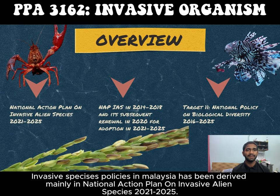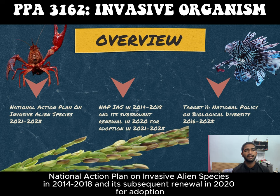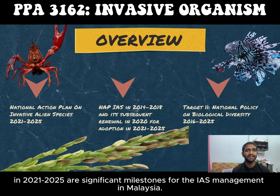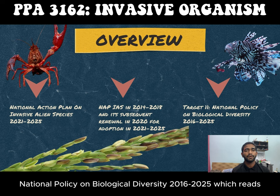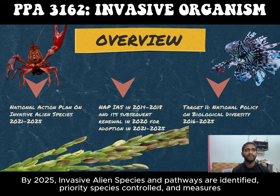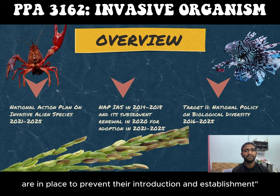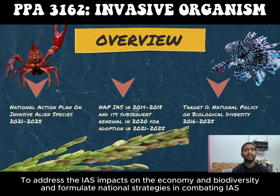Invasive species policies in Malaysia have been derived mainly from the National Action Plan on Invasive Alien Species 2021-2025. The National Action Plan on Invasive Alien Species in 2014-2018 and its subsequent renewal in 2022 for adoption in 2021-2025 are significant milestones for invasive species management in Malaysia. This plan has been prepared under Target 11 in the National Policies on Biological Diversity 2016-2025, which reads: by 2025, invasive alien species and pathways are identified.